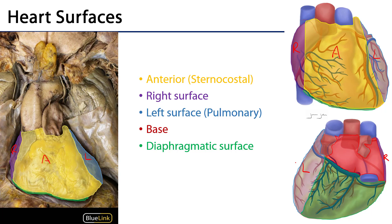Then there is a base of the heart. The base of the heart is everything that would be oriented posteriorly. And then there is a diaphragmatic surface — the portion of the heart which would rest in the same virtual plane as the diaphragm. It's sloping sort of antero-inferiorly and towards the left, because that's the direction of the apex of the heart, as we'll see.